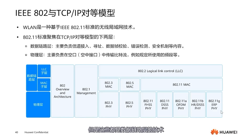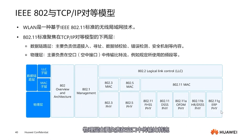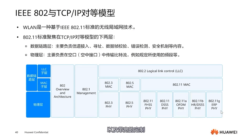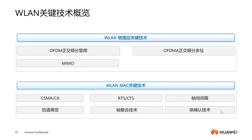These are all data link layer technologies. They mainly handle channel access, polling, data frame validation, error detection, security mechanisms, etc. The physical layer mainly handles the transmission of bit streams over the air — primarily dealing with data transmission and customization of bandwidth. The data link layer mainly implements various functions. Let's look at what key technologies are used in the peer model. First are the key technologies of the physical layer.